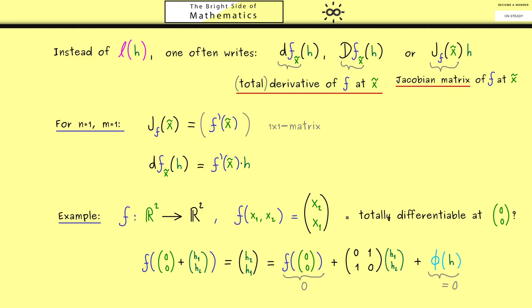And of course this means that this function f here was already linear. But the important part for us is now that this function f is indeed totally differentiable at 0. And moreover this matrix here is the Jacobian matrix at the point 0 0. Ok, so you see this was our first simple example for calculating a total derivative.